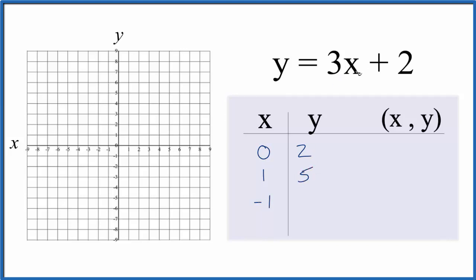And let's choose negative 1. We have negative 1, 3 times negative 1, that's negative 3, so negative 3 plus 2, we get negative 1.